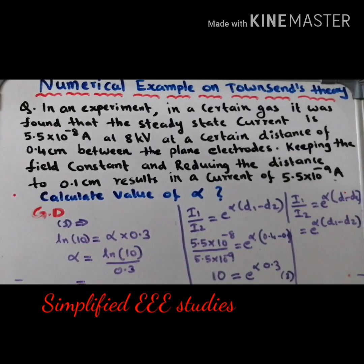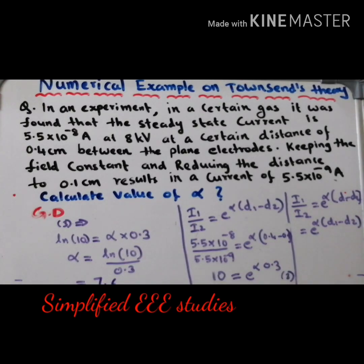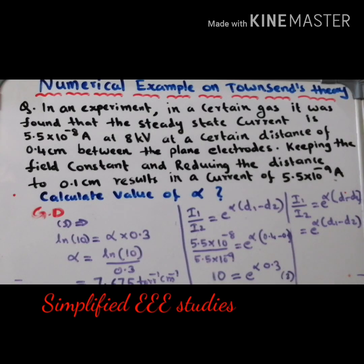Using a calculator, alpha = ln(10) / 0.3 ≈ 7.675 Tor⁻¹ cm⁻¹. The unit Tor is one of the units of pressure. Alpha directly depends on electric field as well as pressure, so the appropriate unit is Tor⁻¹ cm⁻¹. This is the value of alpha — please note it down and verify.